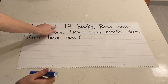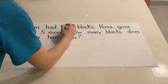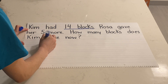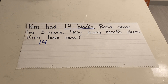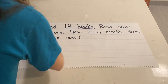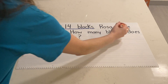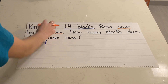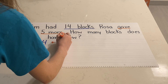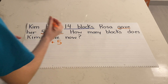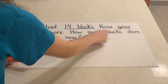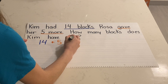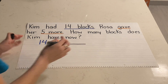The first sentence tells me that Kim had 14 blocks, so that's what I'm going to start my number sentence with: 14. My second sentence says Rosa gave her five more, so I know she gave her more, meaning I'm adding, and I know she gave her five. So plus five. And it's asking me how many blocks Kim has now — equals blank — because that is what we're solving for.